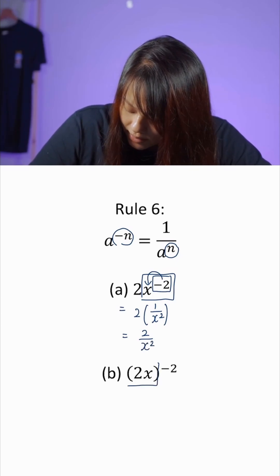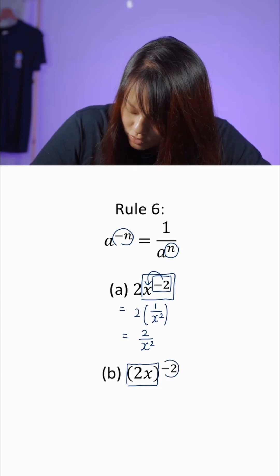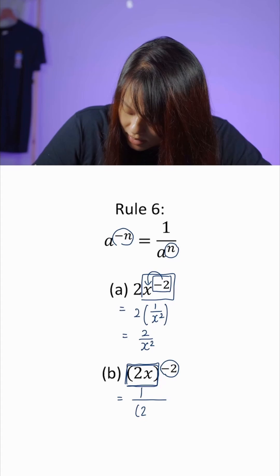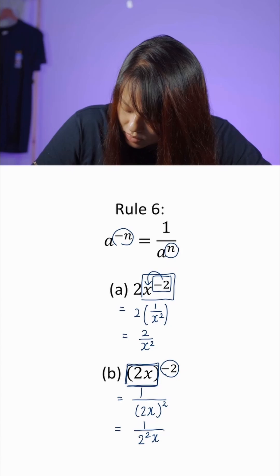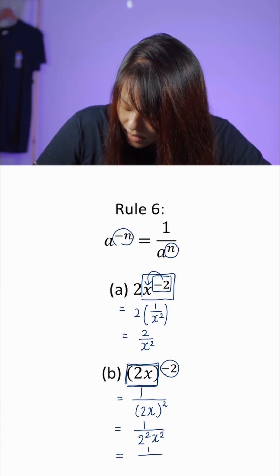Now let's look at the next example. We have (2x)^(-2), the whole thing powered to negative 2. This whole term 2x will go down to the denominator with positive index of 2. Simplifying we'll get 2^2x^2, and simplifying one more time we'll get 1/(4x^2). That's it.